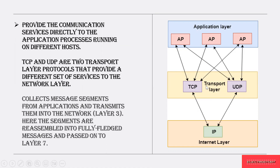This transport layer provides communication directly from the application layer to different hosts. It follows two protocols: one is TCP and another one is UDP. These two protocols provide a set of services to the network layer. It collects all messages and data from the application layer, divides them into segments in the transport layer, and sends them to the network layer, which is accepted by the internet protocol.